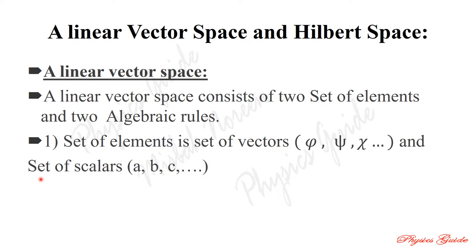In quantum mechanics, what is the linear vector space? 'Linear' means we find solutions in linear-type equations. In a vector space, vectors exist and we apply vector and scalar quantities to calculate the solution of equations. Quantum theory is built upon a linear vector space — it is the mathematical foundation of quantum mechanics.